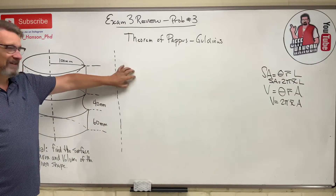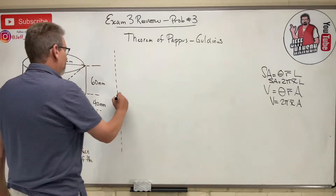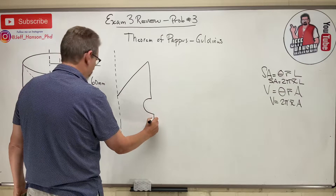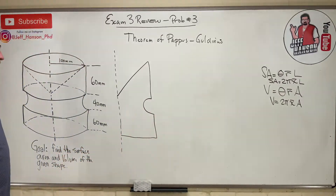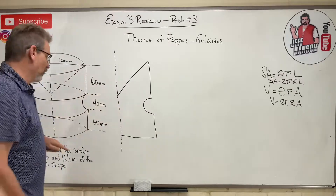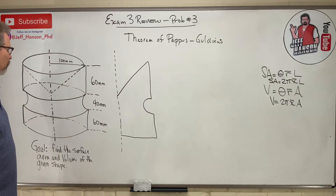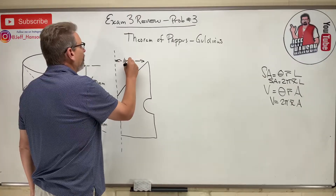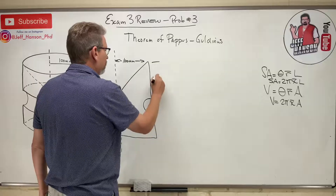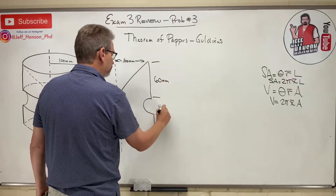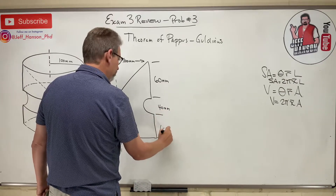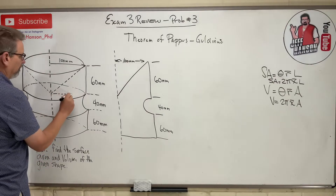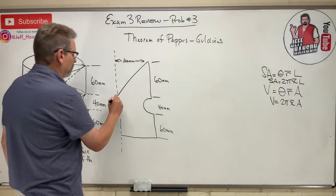Let's see if I draw the same thing you just drew. There it is — if you take that and sweep it all around, it makes that shape. This dimension is 100 millimeters, this one is 60 millimeters, this is 40, and down here is another 60. This bottom edge and this line are on the same plane.